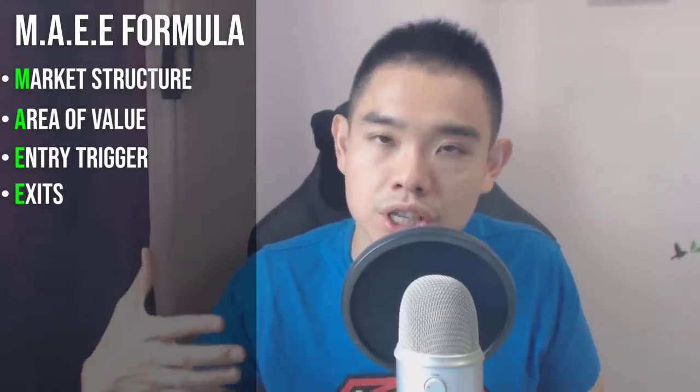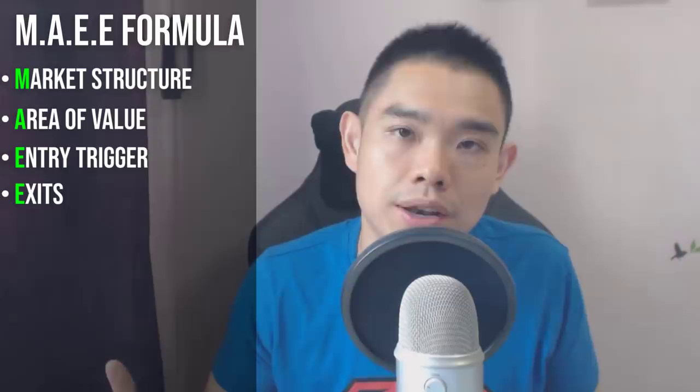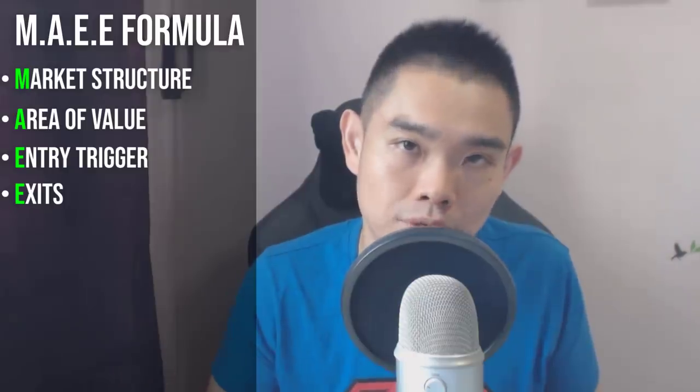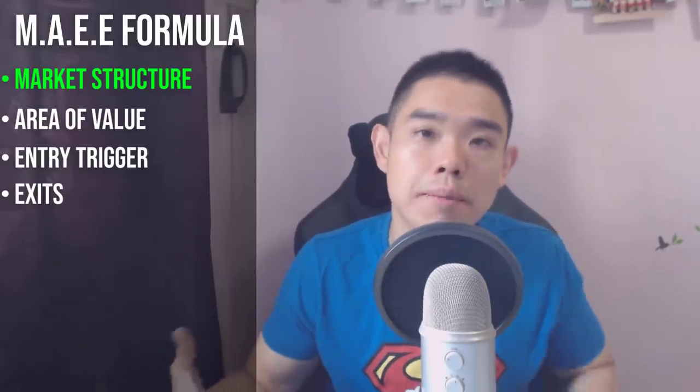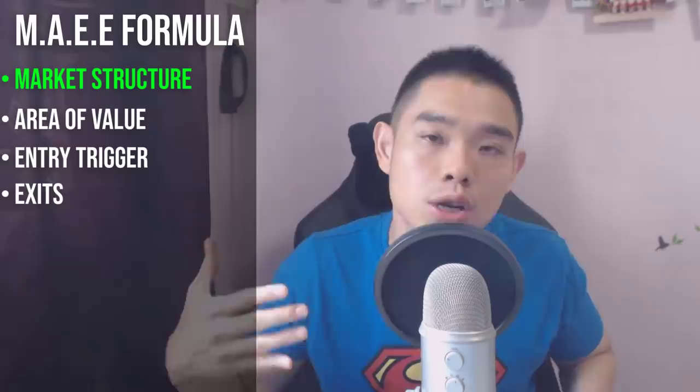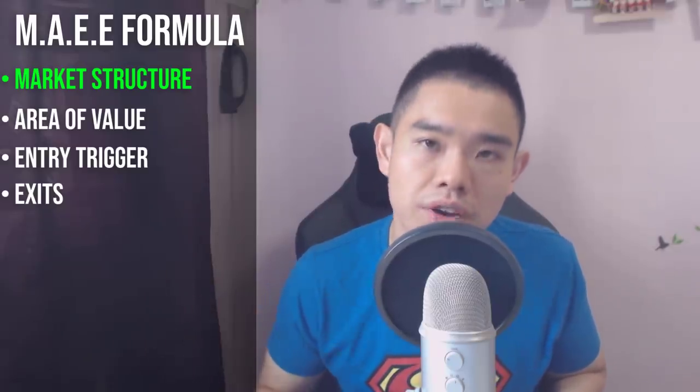Let me give you an example of how to actually use candlestick patterns with the MAE formula. Number one — market structure. Let's say the market is in an uptrend. We know that if the market is in an uptrend, we want to be looking for buying opportunities. So we've identified the market structure.